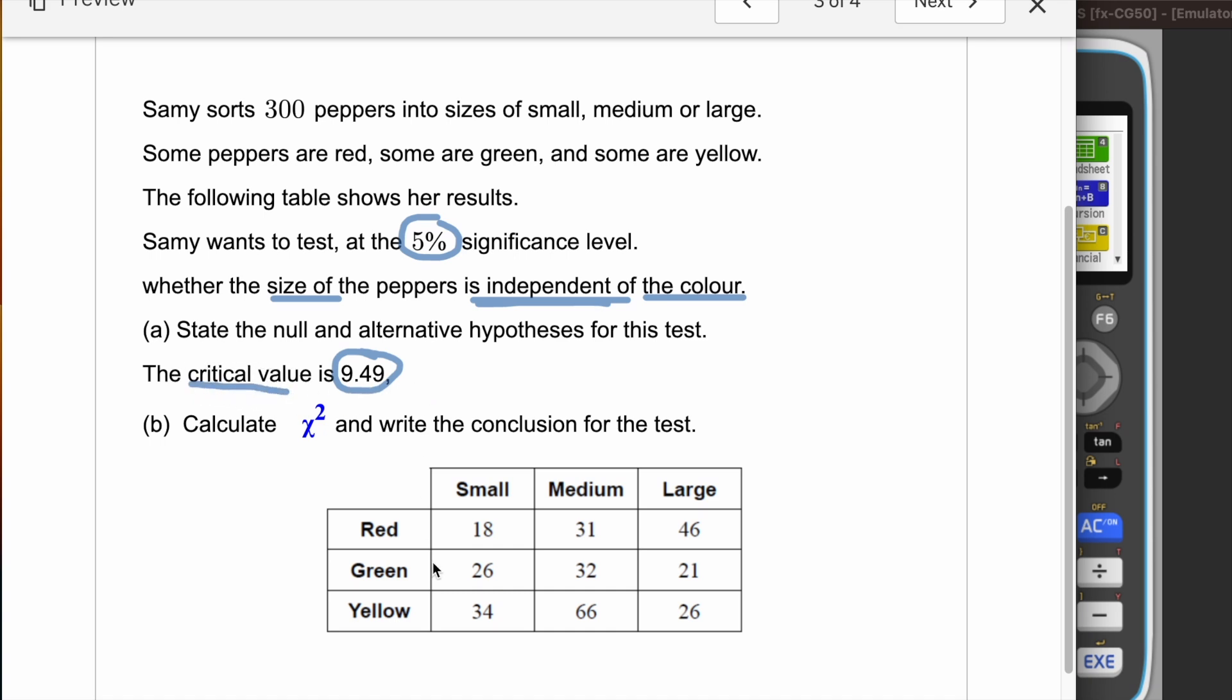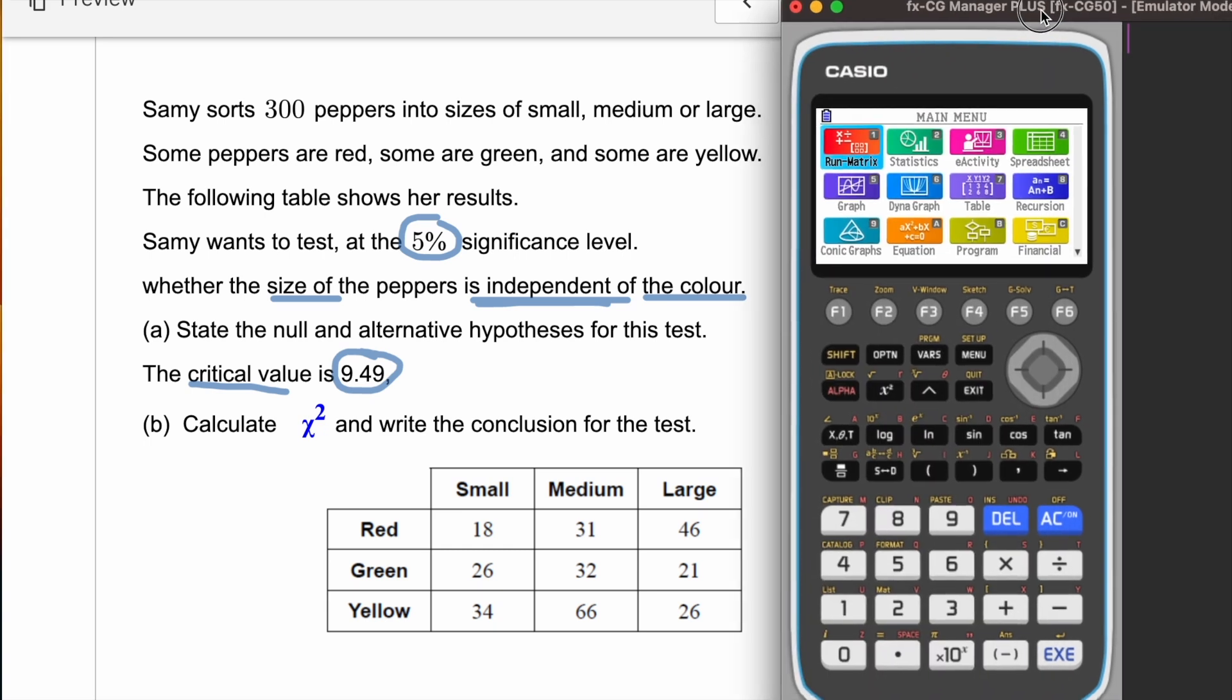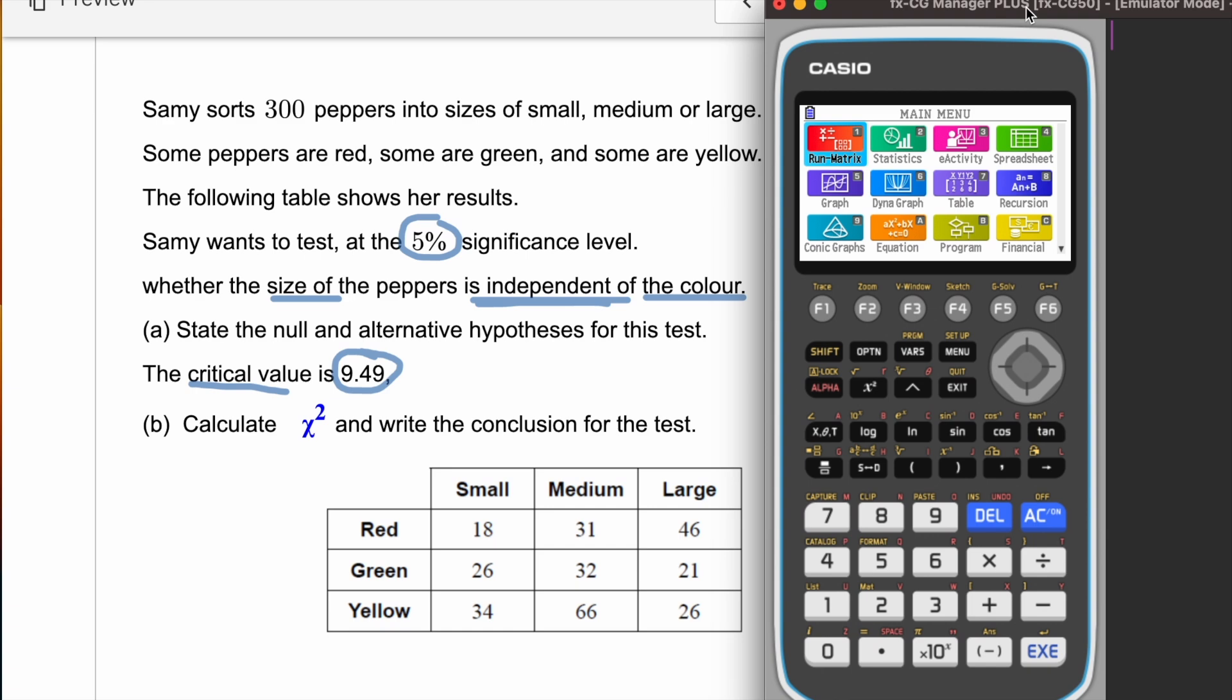There is another parameter which will help us determine whether we should accept or reject, which is the critical value. The critical value is 9.49 given. This is the table of values which we call observed frequencies. Open your GDC, turn it on, and go to run matrix.